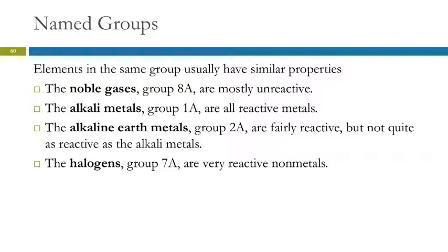Some of those groups, the columns, have names. Elements in the groups have similar properties because that's how the table was set up. Group 8A is the noble gases. One of their common characteristics is that they're very unreactive. The alkali metals in group 1A are very reactive and they're all metals.